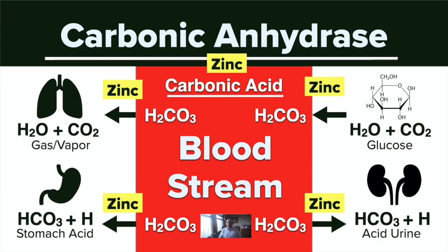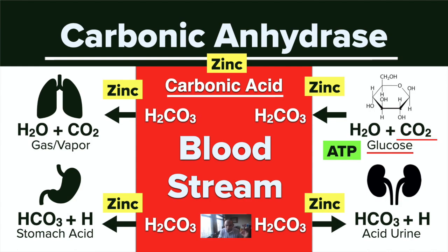Every time we produce ATP — which involves taking a glucose molecule through 22 steps — we generate that ATP, the universal currency that runs every cell of every living organism on planet Earth. The byproduct of making ATP is carbon dioxide, CO2.